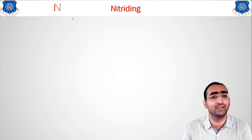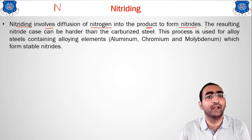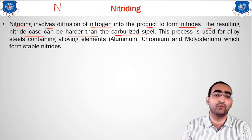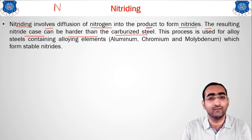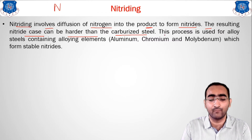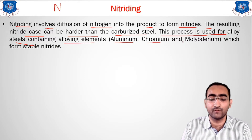As the name suggests, nitriding means introducing nitrogen inside the material. When you insert nitrogen inside the material, the surface of the material becomes hard. Nitriding involves diffusion of nitrogen into the product to form nitrides. The resulting nitride case is harder than a carburized case — we get more hardness with this nitriding method. This process is only used for alloy steels containing alloying elements like aluminium, chromium, and molybdenum.